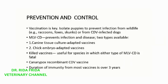Prevention and control of the virus includes isolating puppies to prevent infection from wildlife or from infected dogs. Modified live vaccine of canine distemper prevents infection and disease. Two types of vaccines are available: canine tissue culture-adapted vaccines and chick embryo-adapted vaccines. Killed vaccines are useful for species in which either type of modified live vaccine is fatal. Recombinant vaccines of canine distemper virus include the canary pox recombinant vaccine. Duration of immunity from these vaccines is over 3 years.